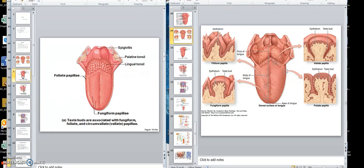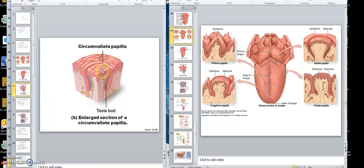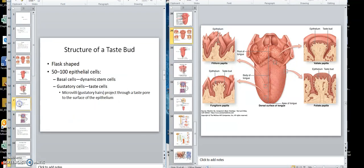We showed the location in this drawing of where they are. Here's showing the circumvallate. Those are taste buds there. Structure of a taste bud, let's look at that now.